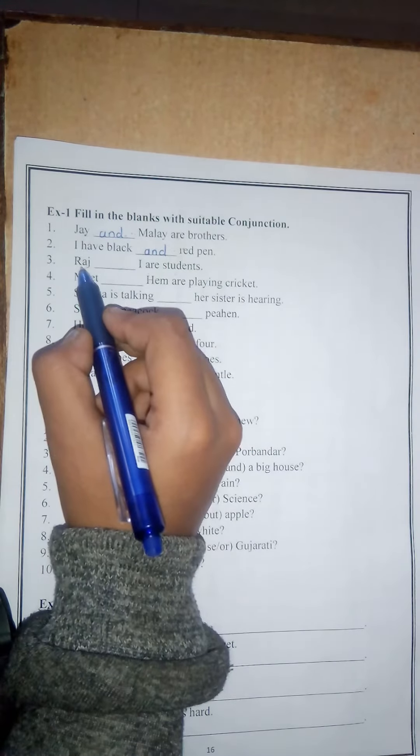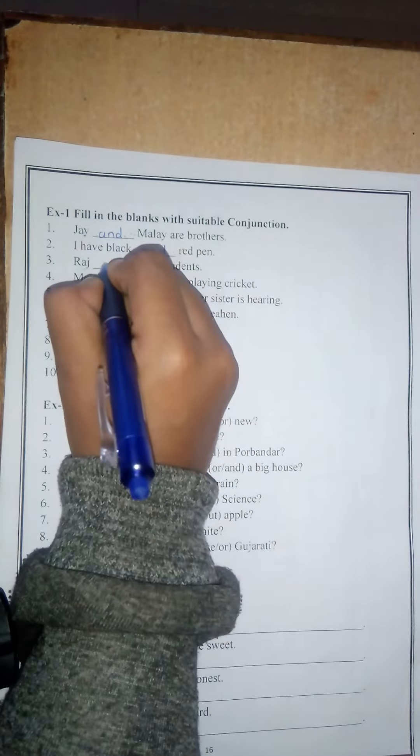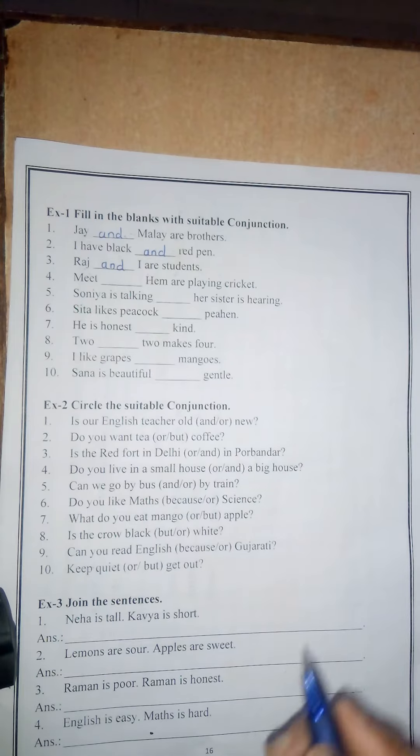Number 3: Raj blank I are students. Here two words are there, so you have to write 'and'. Raj and I are students.